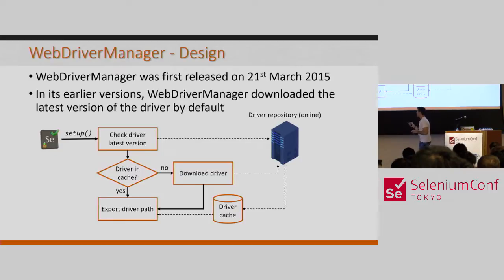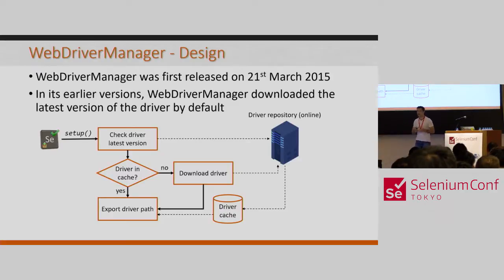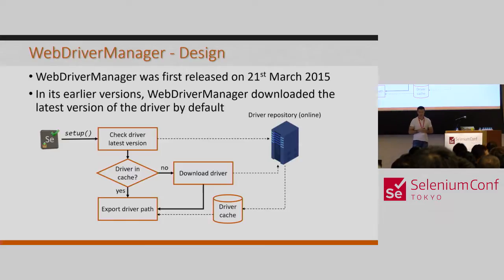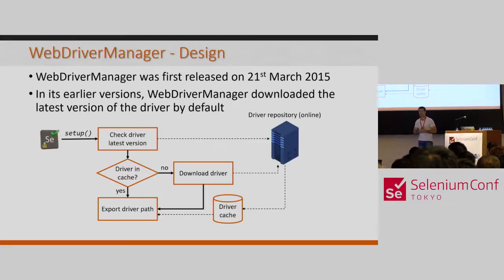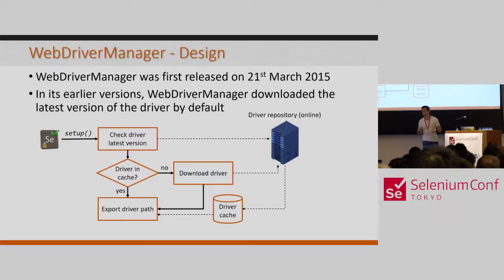When we call to set up WebDriverManager, the first thing the tool does is check which is the latest version available in the repository. We connect to the repository, which is different for each driver, and find out the latest version. Then with that version number, we check if this driver is already available in our computer. We have a cache — a folder somewhere on our hard disk — and if it is not available, we download it. The driver manager connects to the repository and downloads the file, storing it in our cache.